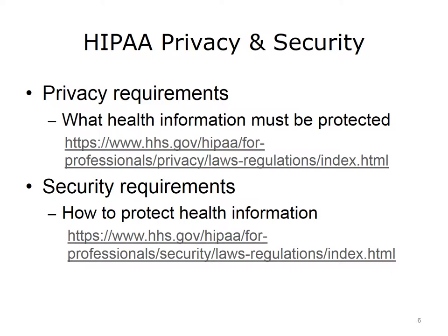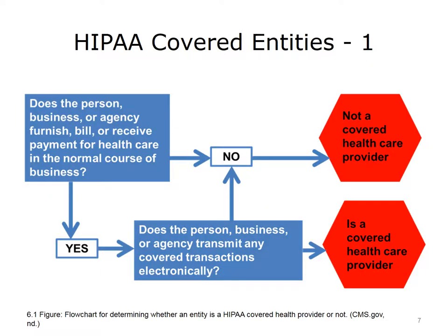Detailed information about all aspects of HIPAA coverage and requirements can be found using the links on this slide. HIPAA privacy and security requirements apply to individuals and organizations called covered entities who transmit health information in electronic form. Transactions that must comply with HIPAA regulations include health plan enrollment and disenrollment, information sharing related to health care referrals, pre-authorization of services, payment of insurance premiums, and payment for health care services.